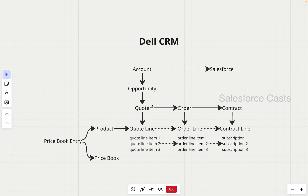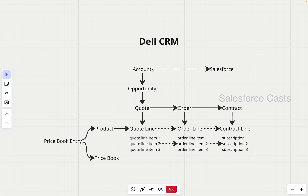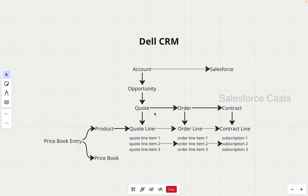The next piece in the puzzle is quote. Quote is the amount that the end customer will be paying Dell. Opportunity is the dollar value that Dell will be making if the deal is closed. However, quote is the amount that the end customer has to pay. The reason why we create a quote is that once after we create a quote, we can add products, we can assign pricing to it, and we can also assign discounts on top of it.